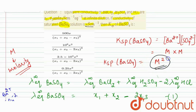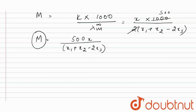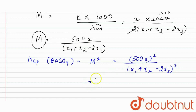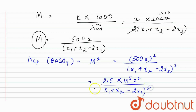Substituting into the Ksp expression: Ksp of BaSO₄ equals m², which gives (500x)² divided by (x1 + x2 − 2x3)², which simplifies to 2.5 × 10⁵ · x² divided by (x1 + x2 − 2x3)². This is the required solubility product.